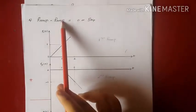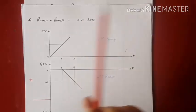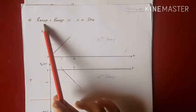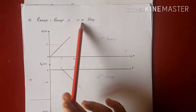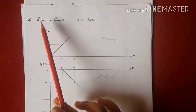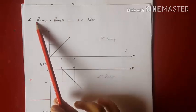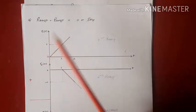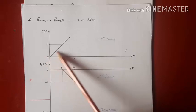The fourth trick: ramp minus ramp will give me 0 or a step signal. This means subtracting one ramp signal from another ramp signal will yield either 0 — that is no signal — or a signal that is step in nature. That depends on the slope of the subtracting ramp signal and the ramp signal from which it is being subtracted. Consider R1 of t, a ramp signal with slope 1 starting at 0 and continuing till infinity.